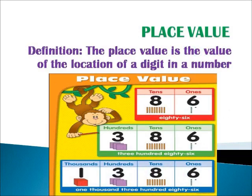In numbers, our first topic is about place value. Number system can be well defined by knowing the place value of the number. So we can see the definition now. The place value is the value of the location of digit in a number.